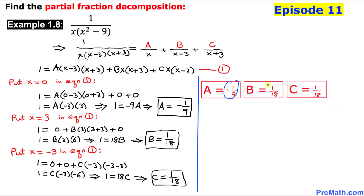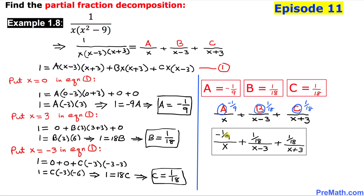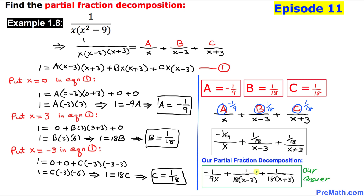So we have found all three values: A equals negative 1 over 9, B equals 1 over 18, and C equals 1 over 18. Substituting these back into our partial fraction setup — replacing A, B, and C — gives us our final answer. Thanks for watching, and please don't forget to subscribe to my channel for more exciting videos. Bye!